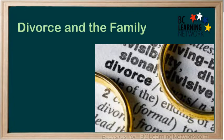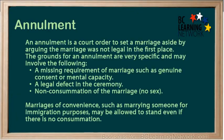Divorce and the Family. An annulment is a court order to set aside a marriage by arguing that the marriage was not legal in the first place. The grounds for an annulment are very specific and may involve the following: a missing requirement of marriage, such as genuine consent or mental capacity.